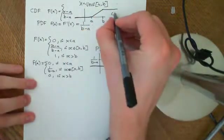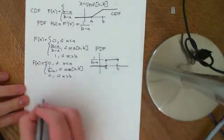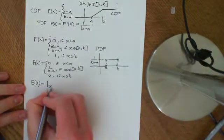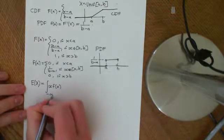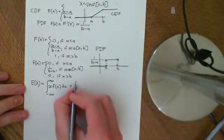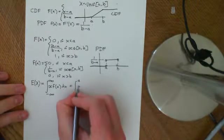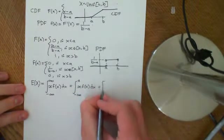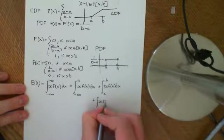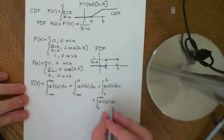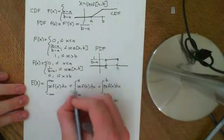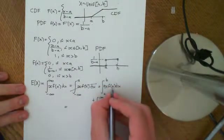We might want to ask: what is the expected value of X if it's distributed uniformly? E[X] is the integral of x times the PDF from negative infinity to infinity. Because f(x) is 0 on (−∞, A) and on (B, +∞), those portions contribute 0, so this reduces to just the integral from A to B of x · f(x) dx.